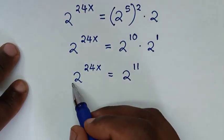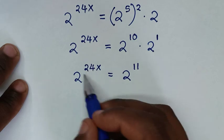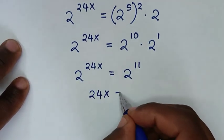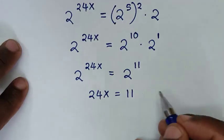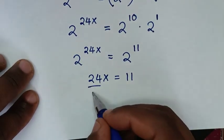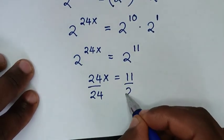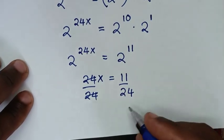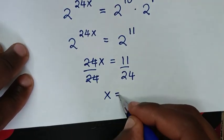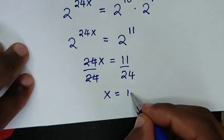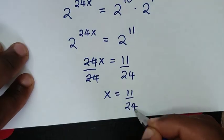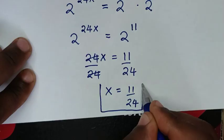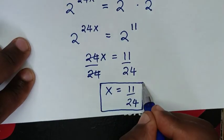Now, since both sides have the same base of 2, we can compare the exponents directly. So 24x equals 11. Dividing both sides by 24, the 24s cancel, giving us x equals 11 over 24. This is the final answer for the value of x.